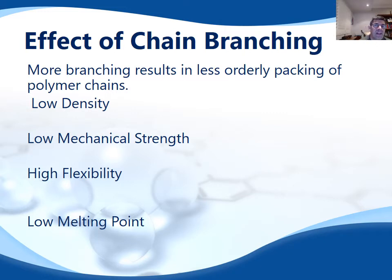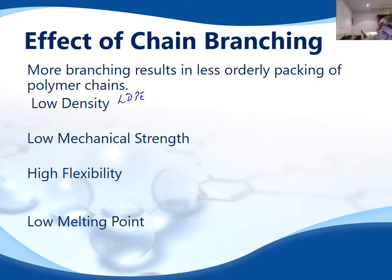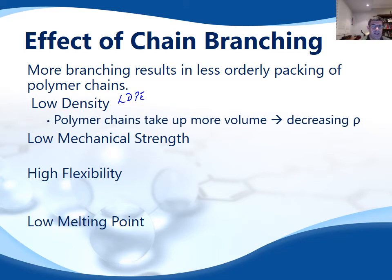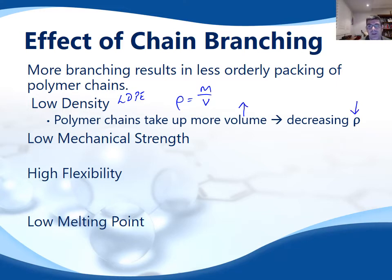Looking at the effects of chain branching more closely: this directly links to density. For something like LDPE, where the density is much lower, the polymer chains take up more volume. Because density equals mass over volume, if the volume increases, then the density — rho — will decrease.